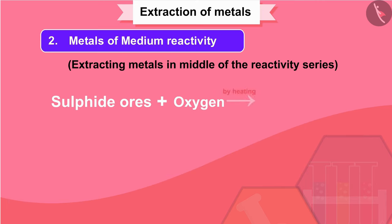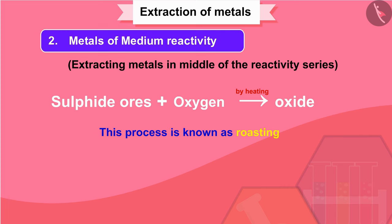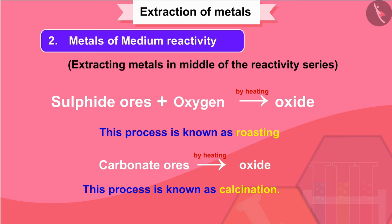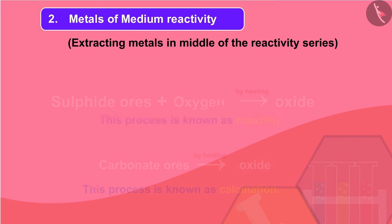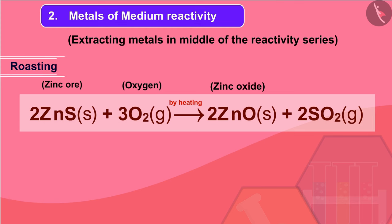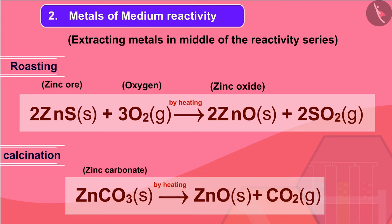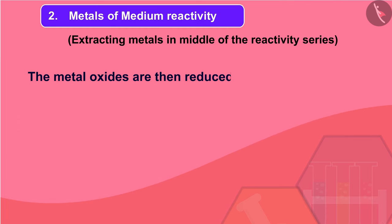The sulfide ores are converted into oxides by heating strongly in the presence of excess air — this process is known as roasting. The carbonate ores are changed into oxides by heating strongly in limited air — this process is known as calcination. The chemical reactions that take place during roasting and calcination of zinc ores are shown here.